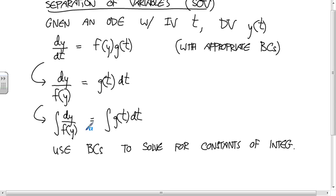You're looking for things that are in this form, and when you have them in that form you solve by integration. You end up with constants of integration, and you use the boundary conditions to find those. Now I'm going to go through a few examples of the types of problems you can solve this way. Here's the first example.